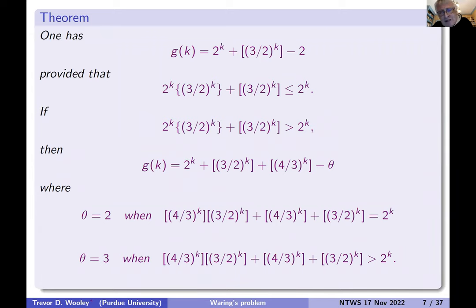And it's fair to say that really we have a complete understanding of little g of k at this point and have done for 40 years. So this conjecture is essentially known. The lower bound that I presented is holding with equality.